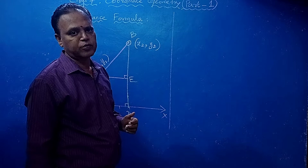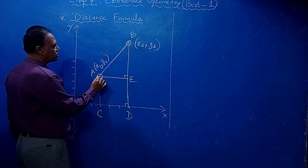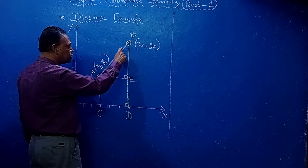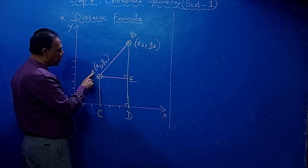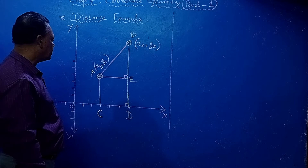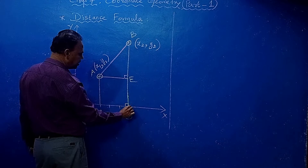Now we will see an important topic: the distance formula. We are going to find the distance between two points. Let A be one point with coordinates x1 comma y1, and B as x2 comma y2.